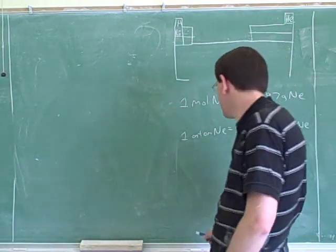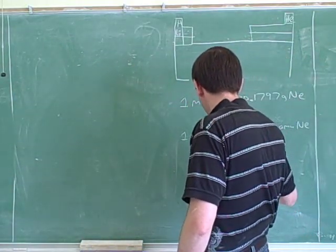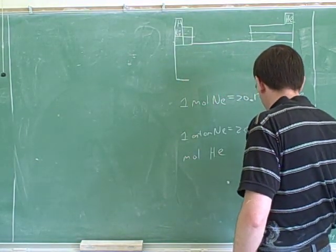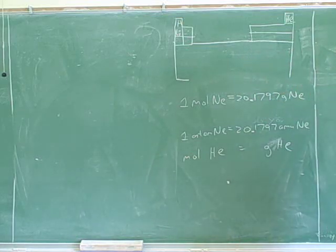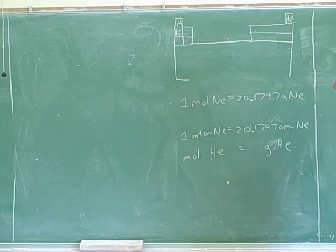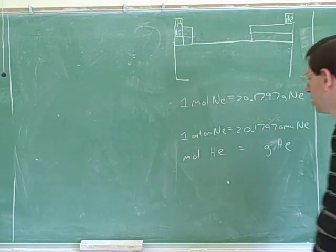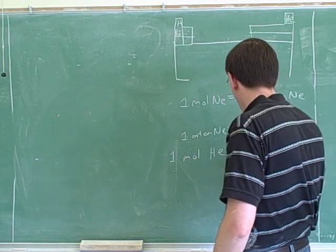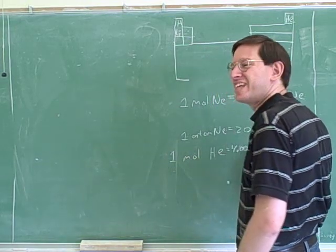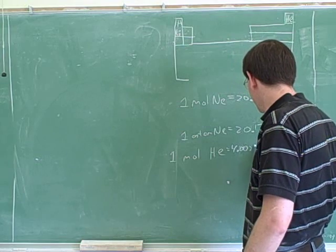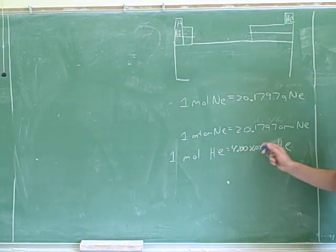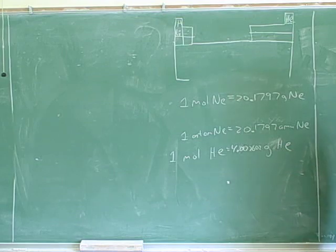So what would be the equivalency for helium between moles of helium and grams of helium, according to the periodic table? One mole of helium is 4.002602 grams. So there's the equivalency between moles of helium and grams of helium.